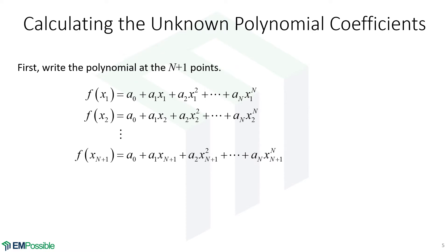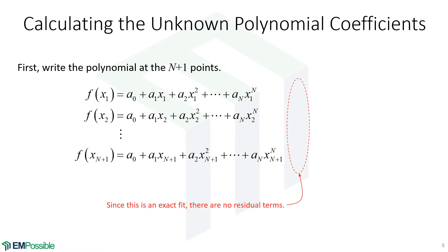For each one of our measured points, we write this polynomial. So we'll have the same number of equations as we have unknowns. We don't have to do a best fit or anything like that — this will be a nice exact solution. Also notice we don't have to add residual terms here. That's because we're doing an exact fit and so the residual terms really are zero. There is no noise here. The function that we fit will pass exactly through the points that we've measured.